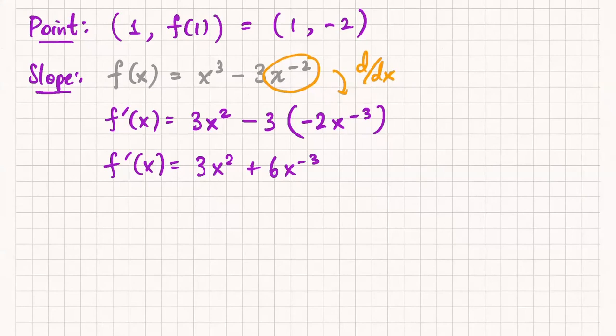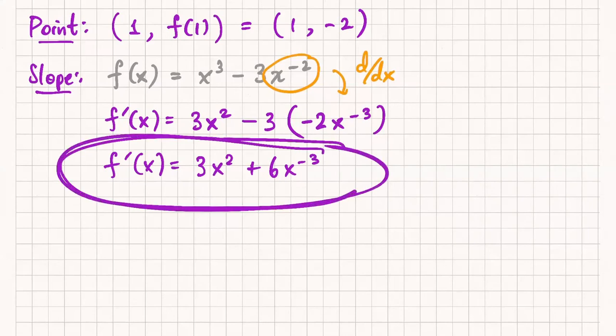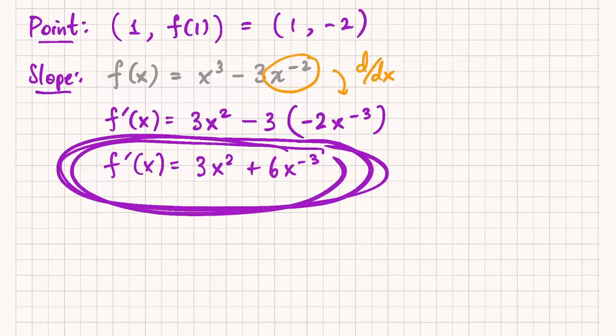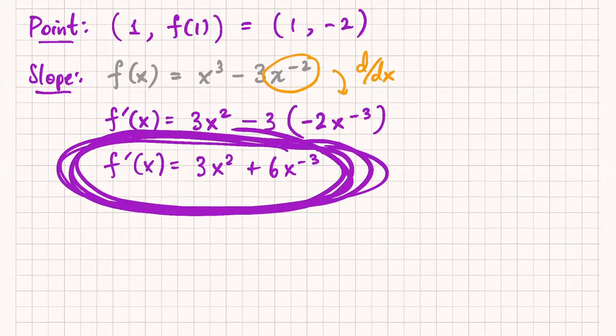So a common mistake I see sometimes is an incomplete understanding of what the derivative is. It's understanding that the derivative gives you the slope of the tangent line, but thinking that this is the slope of the tangent line. This is not the slope of the tangent line. First of all, a slope of a line is a number. This is not really a number. This is some function. You should think of this as not the slope of the tangent line. This is a recipe for finding slopes.